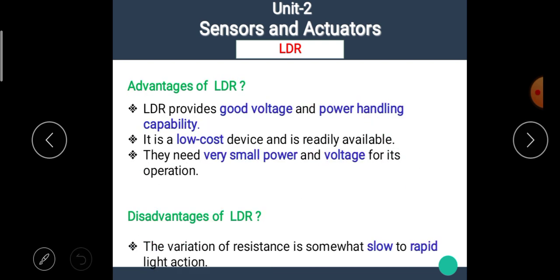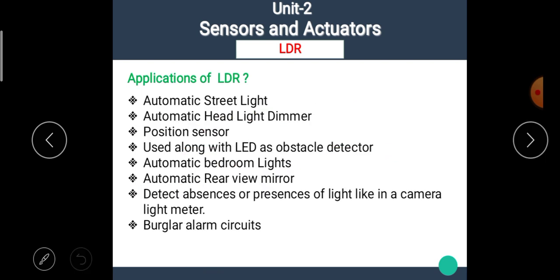I hope you all understand the characteristics of LDR. Now, let's see the advantages and disadvantages of LDR. The advantages are: LDR provides good voltage and power handling capacity. It is a low cost device and it is readily available. They need very small power and voltage for its operation. These are some advantages of LDR. Let's see disadvantages of LDR. The variation of resistance is somewhat slow to rapid light action. That means the response time is low for the LDR.